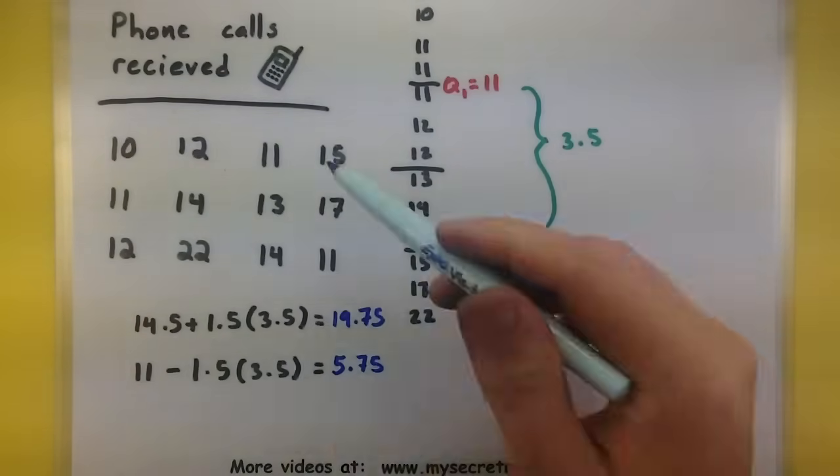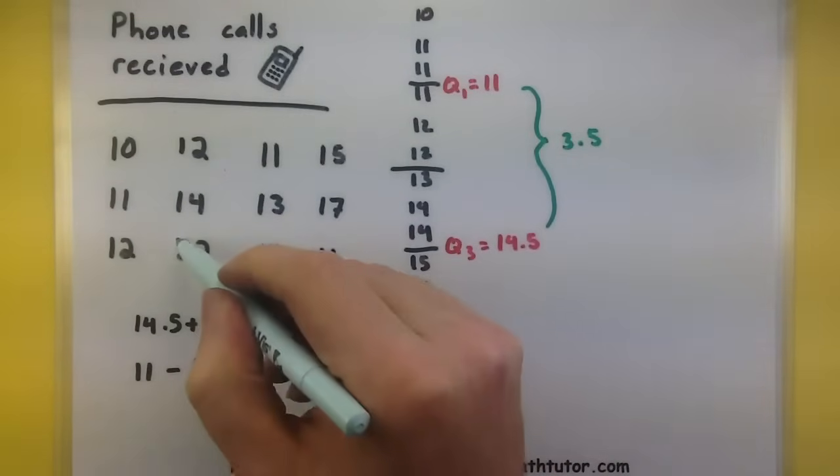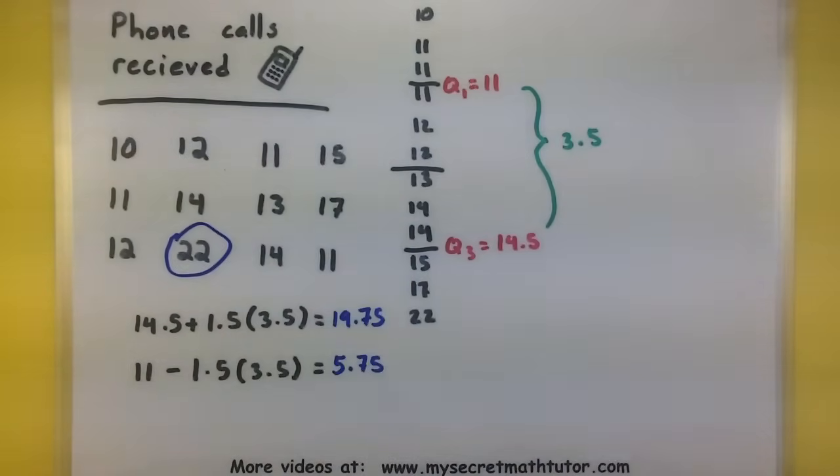Well looking at all of our data, we can see that the 22 is definitely larger than 19.75, so it's definitely an outlier. Unfortunately I have nothing less than 5.75, so I don't have any lower outliers. So this entire set of data only has one outlier and it's just the 22. So it's definitely an extreme value.